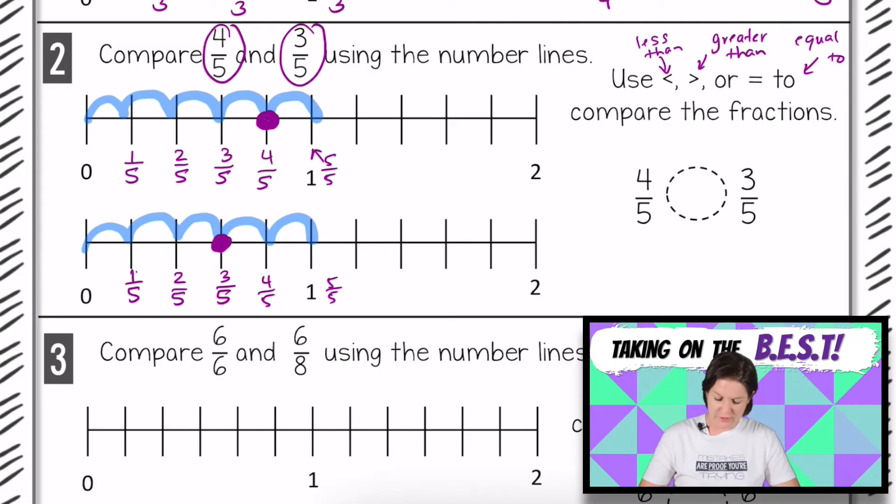All right, so let's take our first fraction, 4/5, and bring it down to compare. We can see that 4/5 goes a little bit past 3/5, meaning that 4/5 is greater, right? So we want to use this sign right here to show that 4/5 is greater.